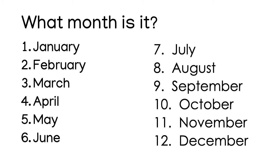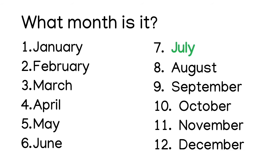What month is it? January, February, March, April, May, June, July, August, September, October, November, December. July. It is July.